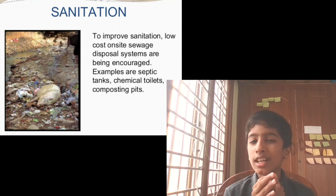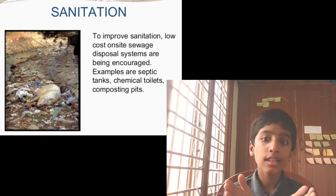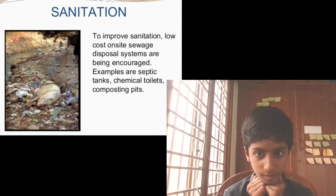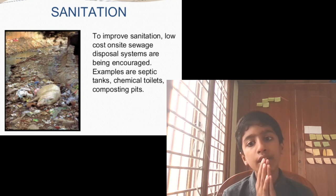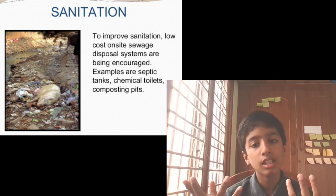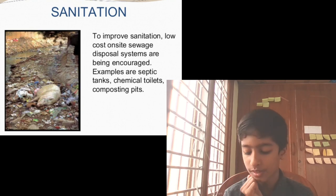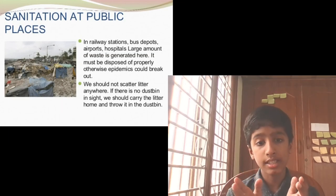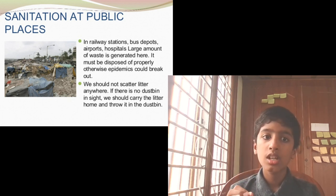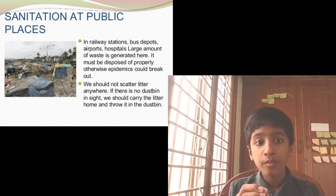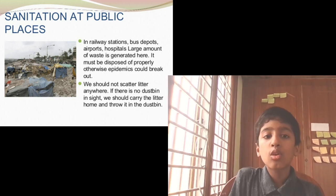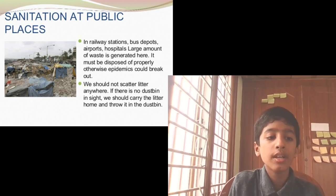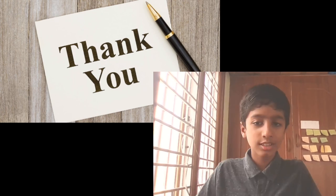You can make composting pits in your home and throw compostable waste like banana peels into them — after some time they will mix with the soil. At public places like railway stations, bus depots, airports, and hospitals, large amounts of waste are generated. We should not scatter litter anywhere; if there is no dustbin nearby, carry the litter home and throw it in the dustbin — do not litter in public.